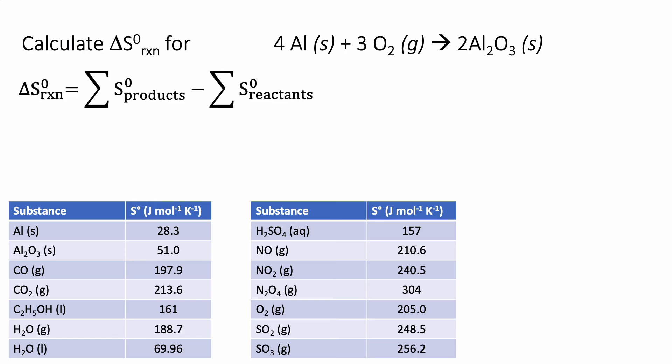So here's our equation. And remember, we need to calculate the entropy for our products. And it looks like we only have one product, aluminum oxide. Well, we have two molecules of aluminum oxide.